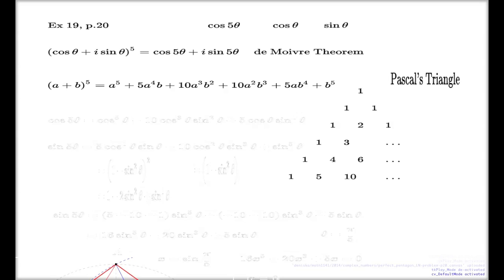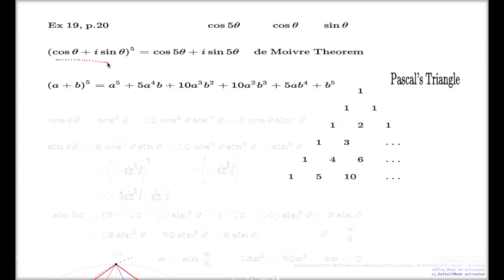The method I'm going to use to find the actual answer to the question on page 20 — to find the expression for cos(5θ) in terms of cos and sine alone — is this: I will do this expansion, then collect all of the terms which correspond to the real part, and then equate to this real part. That will be all there is to it.